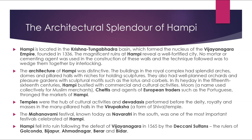The architectural splendour of Hampi: Hampi is located in the Tungabhadra Basin, which formed the nucleus of the Vijayanagara Empire founded in 1336. The magnificent ruins at Hampi reveal a well-fortified city. No mortar or cementing agent was used in the construction of the walls; the technique was to wedge stones together by interlocking. The buildings in the royal complex had splendid arches, domes and pillared halls with niches for holding sculptures, as well as well-planned orchards and pleasure gardens with sculptured motifs such as lotuses and corbels. In their heyday in the 15th century, Hampi bustled with commercial and cultural activities. Muslim merchants, chakras and agents of European traders such as the Portuguese thronged the markets of Hampi. Temples were the hub of cultural activities and Devadasis performed for the deity, royalty and masses in the many-pillared halls of the Virupaksha temple, a form of Shiva temple. The Mahanavami festival, known as Navratri in the south, was one of the most important festivals celebrated at Hampi. Hampi fell into ruin following the defeat of Vijayanagara in 1565 by the Deccani sultans — the rulers of Golconda, Bijapur, Ahmednagar, Berar and Bidar.